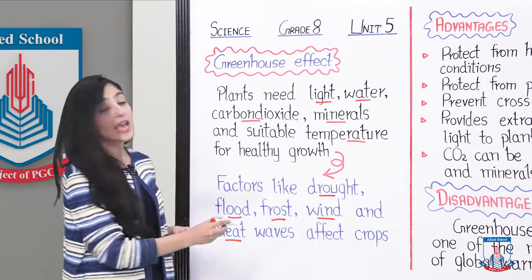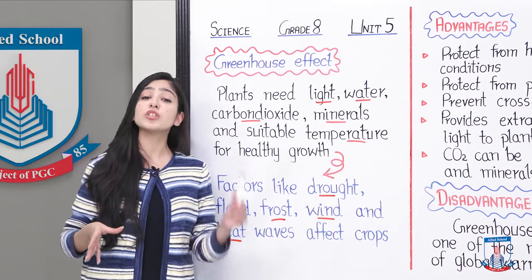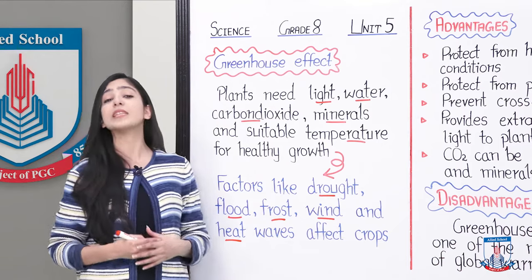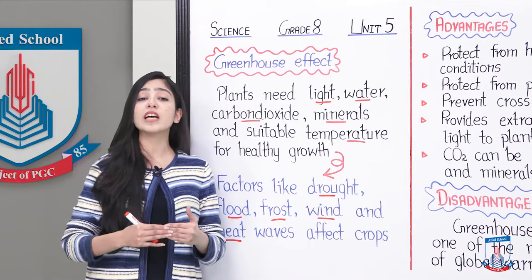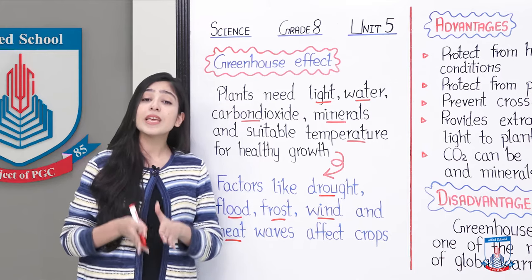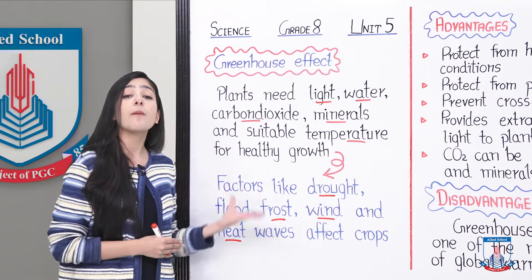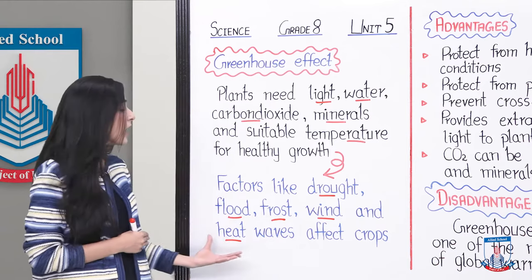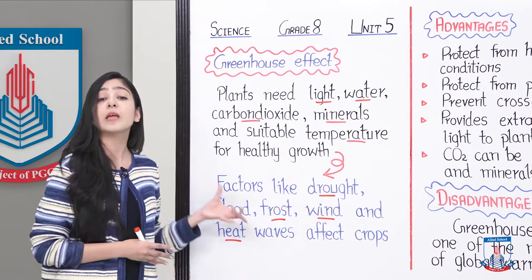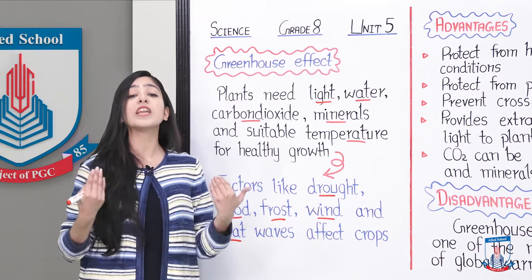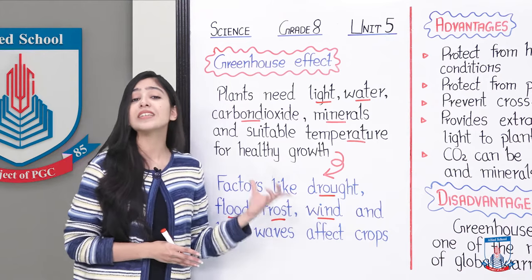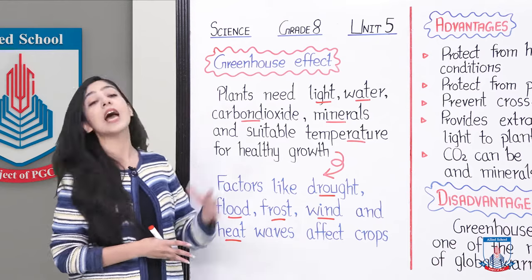The last harsh condition is heat waves. When our plants get very warm, transpiration — the water loss process — increases. The soil becomes dry, and the plant will dehydrate and die. So whatever the harsh conditions are, they will affect our crops or plants if they are growing in an open environment. That is why the greenhouse effect is used.